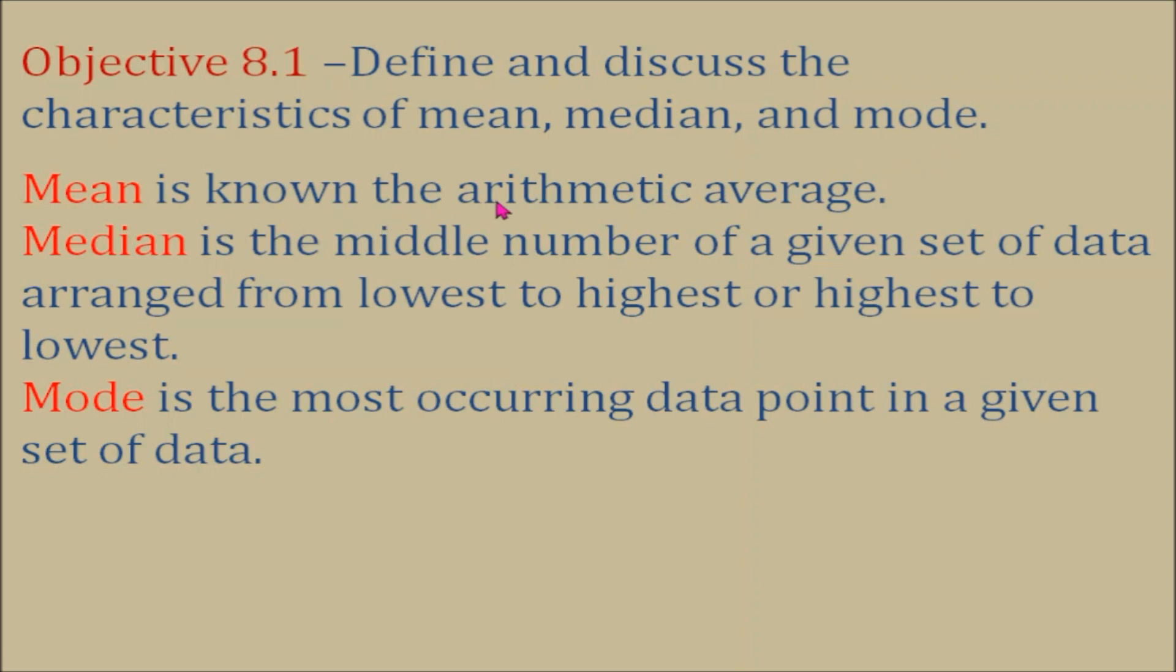Mean is known as the arithmetic average. Median is the middle number of a given set of data arranged from lowest to highest or highest to lowest. Mode is the most occurring data point in a given set of data.